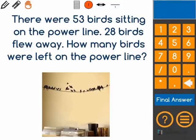First, I think about what I know. I know that there were 53 birds sitting on the power line, and then 28 birds flew away.